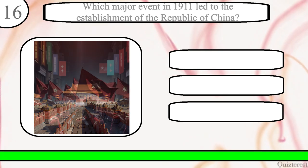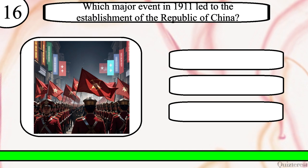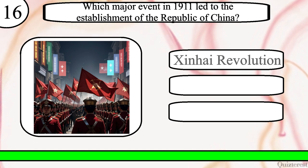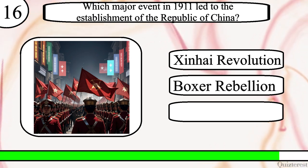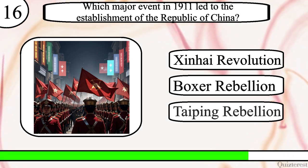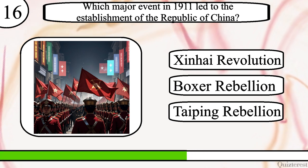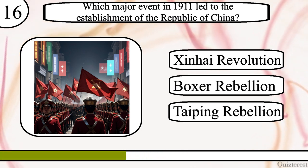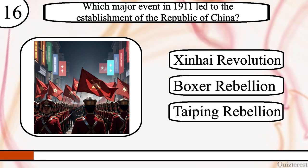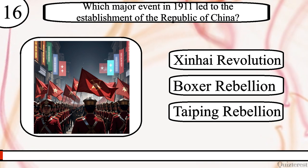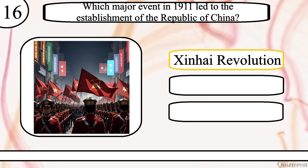Question 16. Which major event in 1911 led to the establishment of the Republic of China? Xinhai Revolution, Boxer Rebellion, or Taiping Rebellion? The correct answer is Xinhai Revolution.